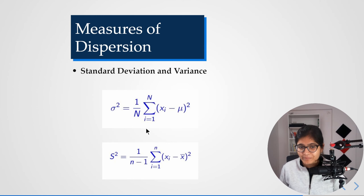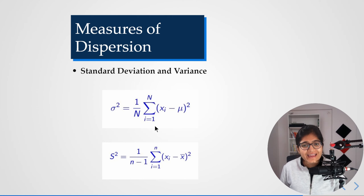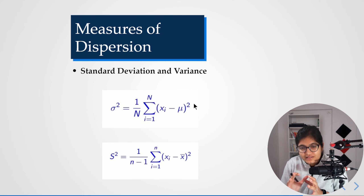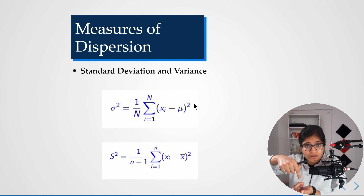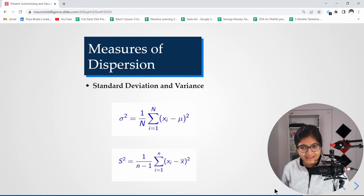The formula to calculate population variance is: one divided by capital N — where capital N is the total number of data points — times the summation from i equals 1 to N of (xi minus mu) squared. Here mu indicates the population mean. With this population variance formula, you can understand that variance is measuring how far the data is from the population mean.